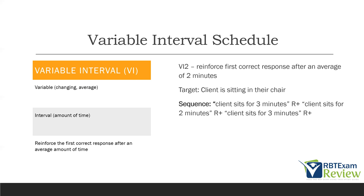Given that it's an interval, it doesn't produce as high a rate as a ratio schedule because there's time in between and it's not reliant on the number of responses. But since it's an average, the client can't predict when reinforcement is coming — and that's the point. When fading schedules, fixed ratio is a good place to start because it strengthens behavior and you deliver a lot of reinforcement. Once the behavior is learned, you fade into more variable schedules.